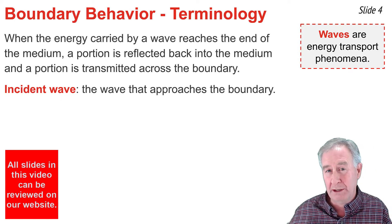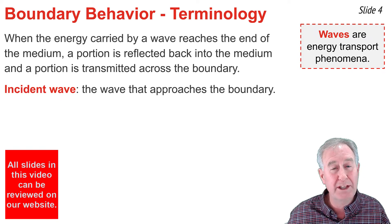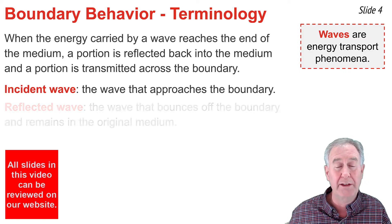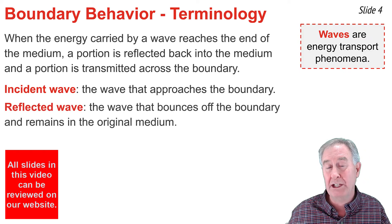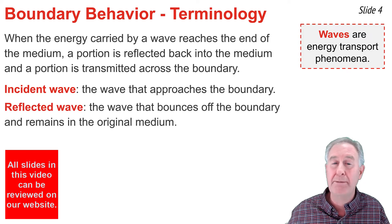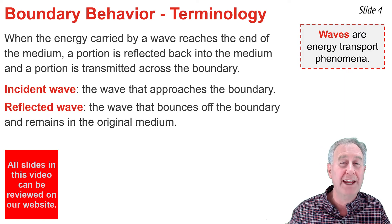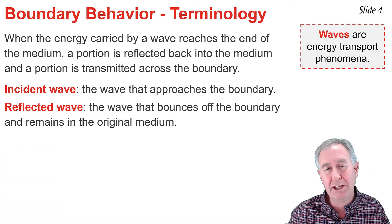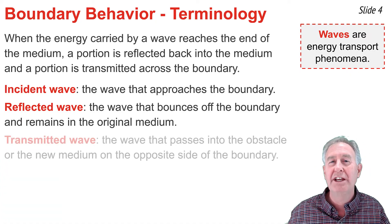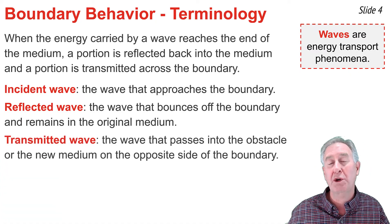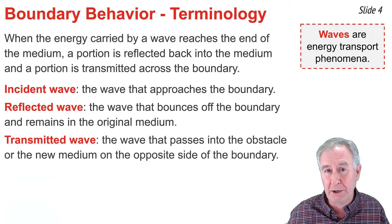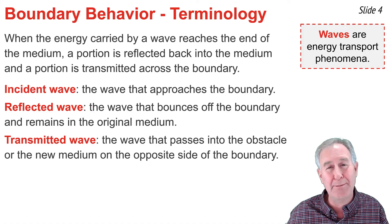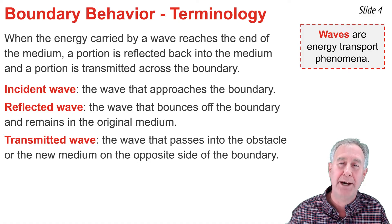There are three vocabulary terms you should understand. The incident wave is the wave that is approaching the boundary. The reflected wave is the wave that has bounced off the boundary and remains in the original material. And finally, the transmitted wave is the wave that has crossed the boundary into the new obstacle or medium on the opposite side of that boundary.